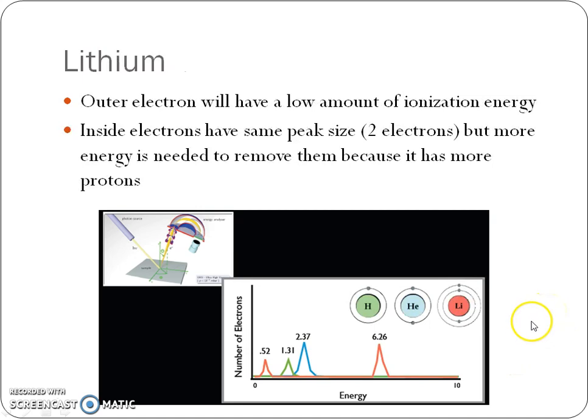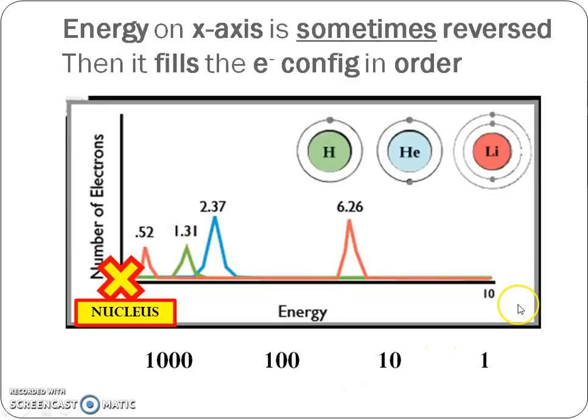Next is helium and the neat thing is that he shows you both of them side by side. Both elements have one peak that shows the one energy level, but one peak is larger than the other. Why? There's one electron here for hydrogen versus two electrons here for helium. Notice the energy for helium to take those electrons away is going to be much greater than taking away the electrons for hydrogen. Then he added lithium. What do you see here? Now you see two peaks for lithium. You see a big peak for the two electrons on the first energy level and then a smaller peak for the one electron on the outermost.